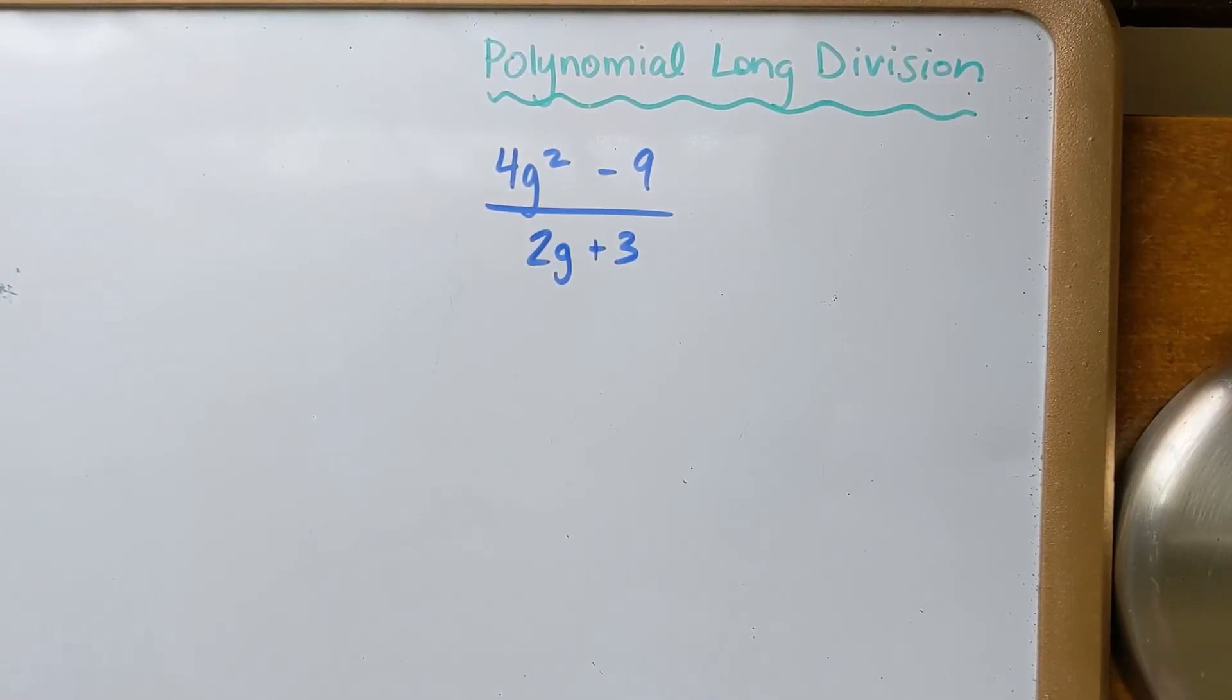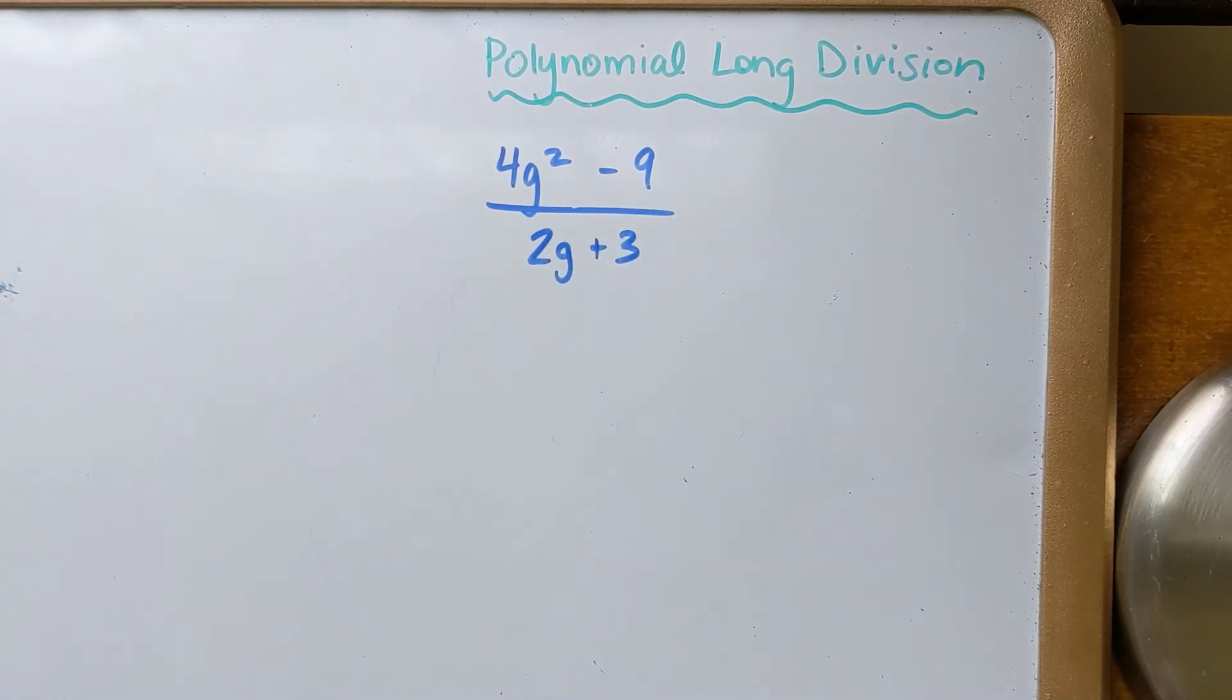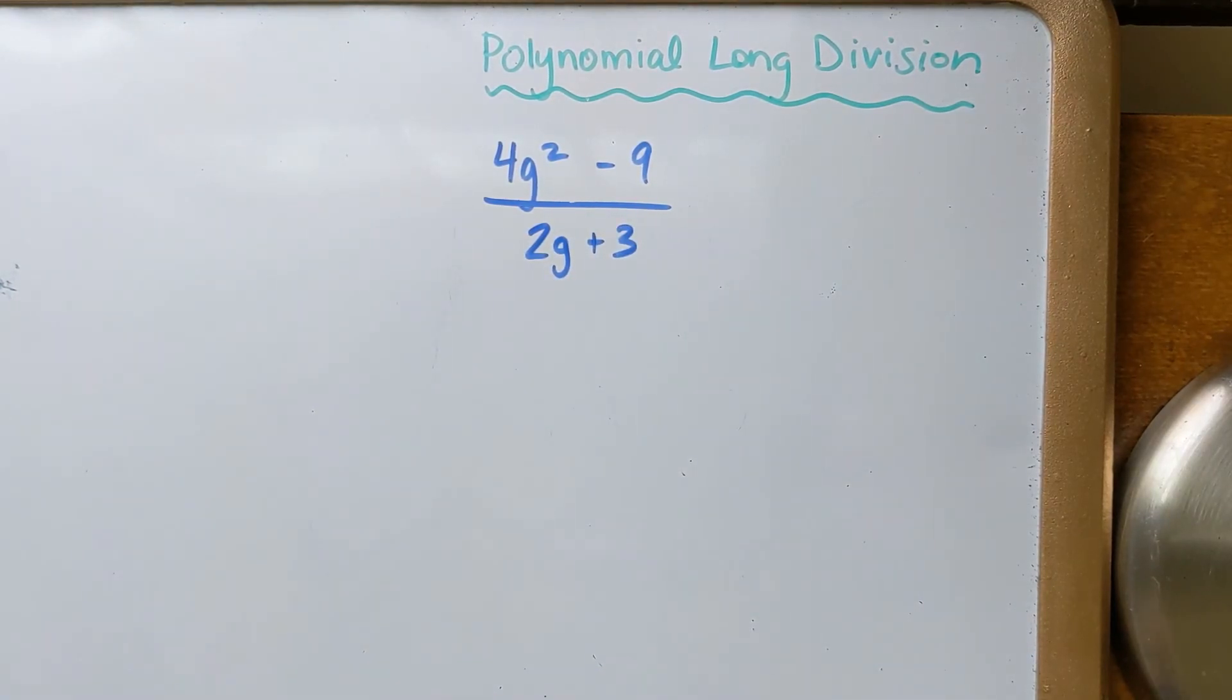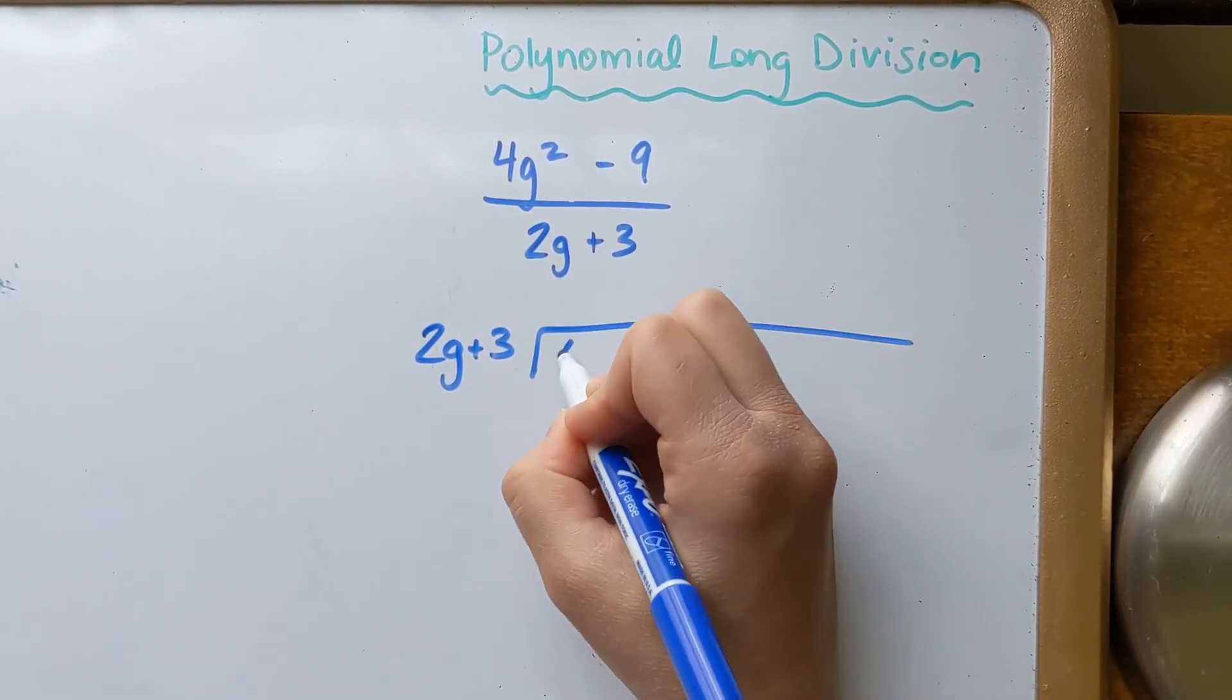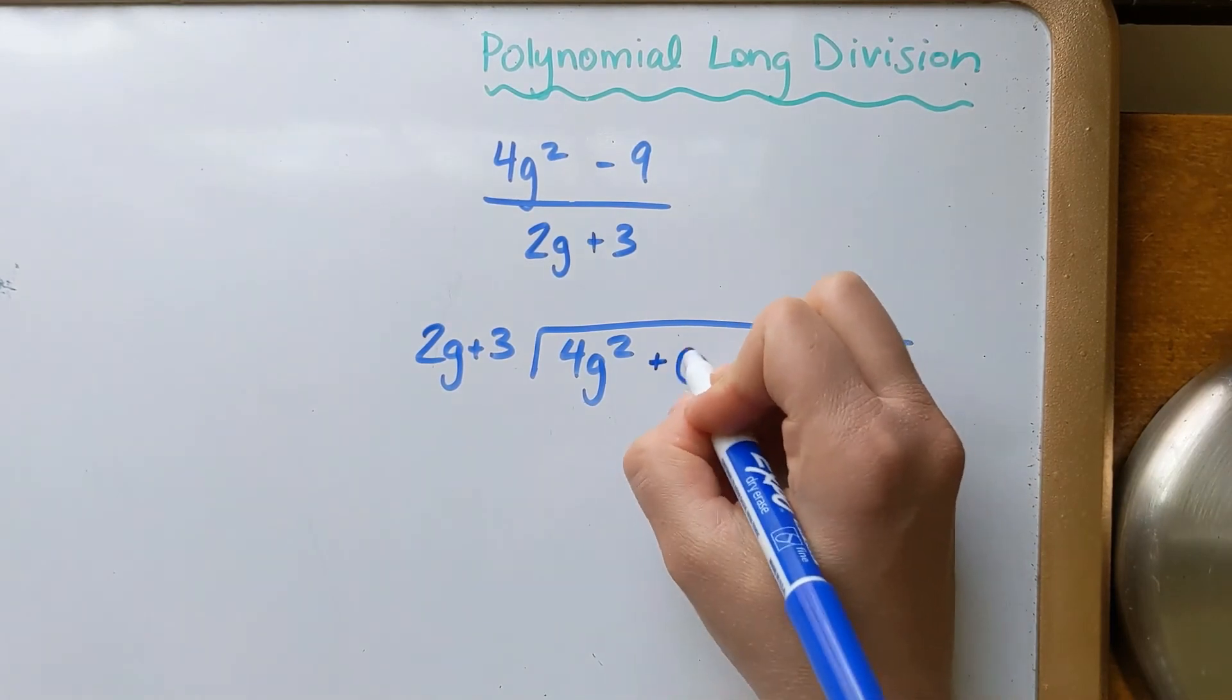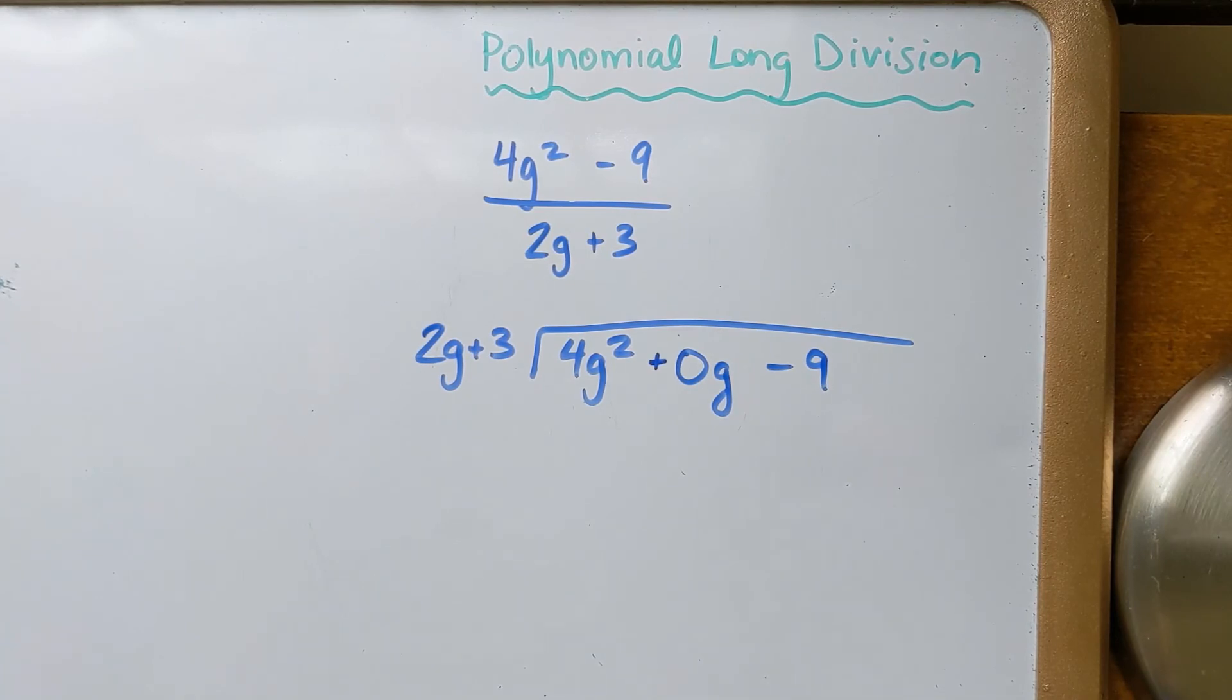Okay. One last case that I want to look at. And that's one where you have a squared term, but you don't have a first power term, and then you have a constant. So sometimes when you're dividing, you might be missing a term, kind of like this. We don't see a term with g to the first. So we're going to look at what would happen when you do that. Okay, so 4g squared minus 9 divided by 2g plus 3. I'm just going to set it up so that it looks like a long division problem. Now, when I do this, I want to include my g term, except since it's not really there, I'm just going to put a coefficient of 0. But it's important to have a placeholder there so that you don't kind of mix anything up.